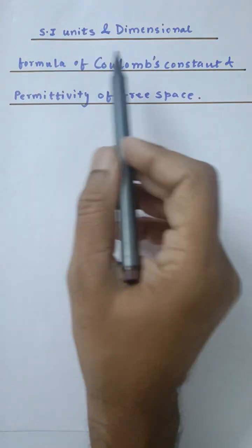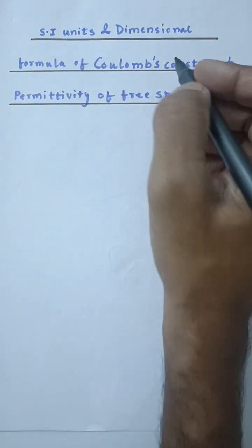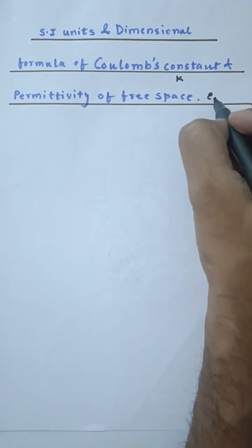Hello. In this video, we are going to discuss the SI unit and dimensional formula of Coulomb's constant K and permittivity of free space ε₀.